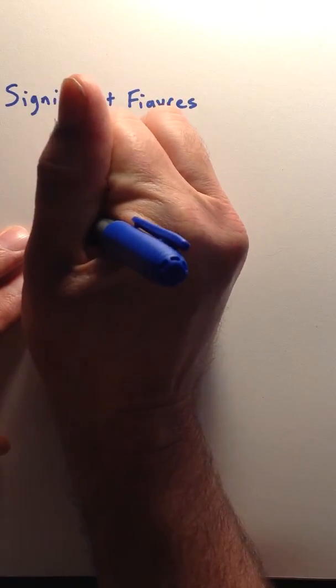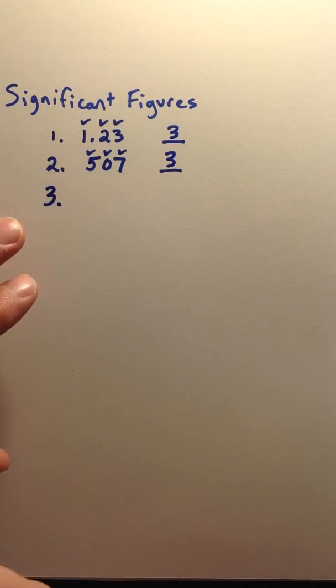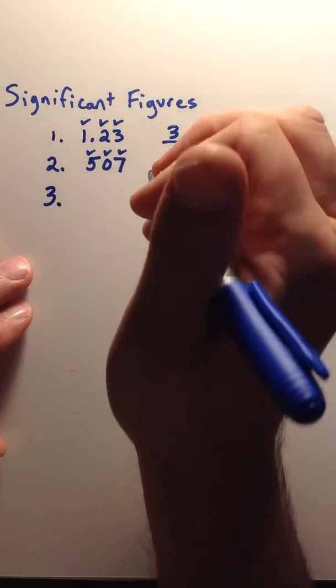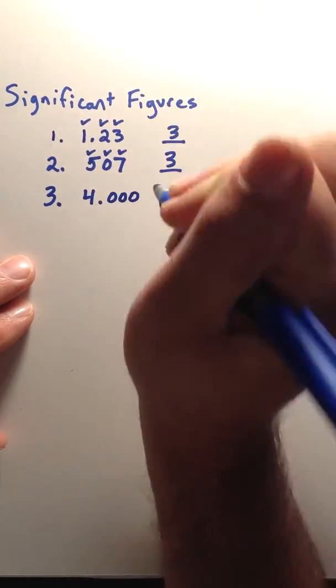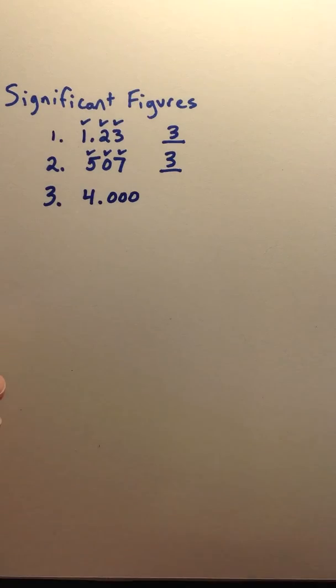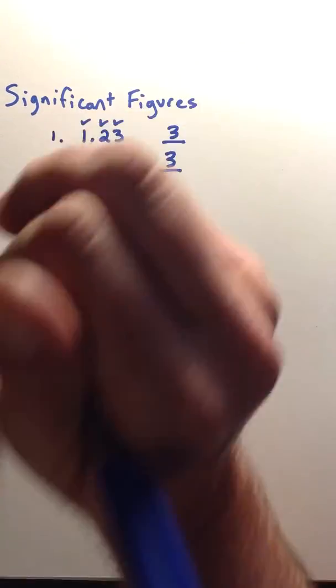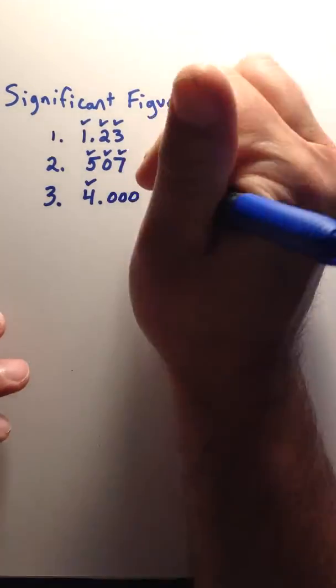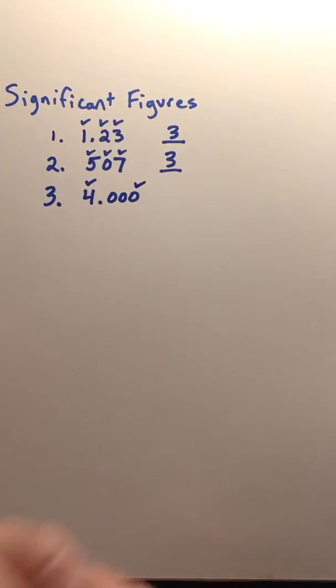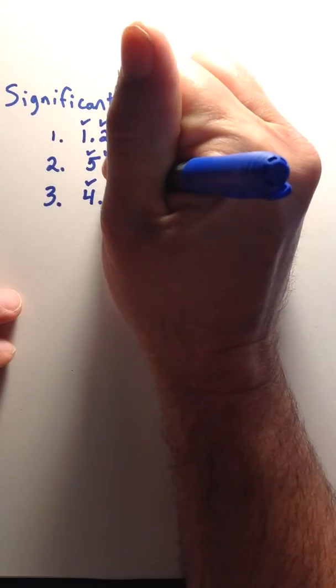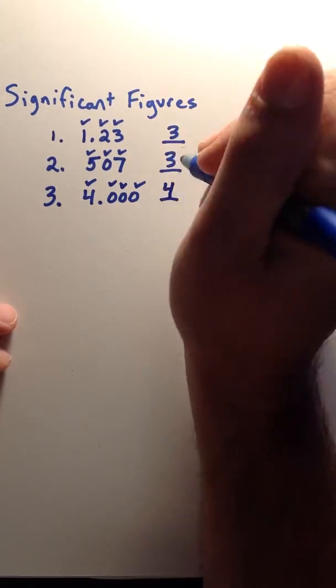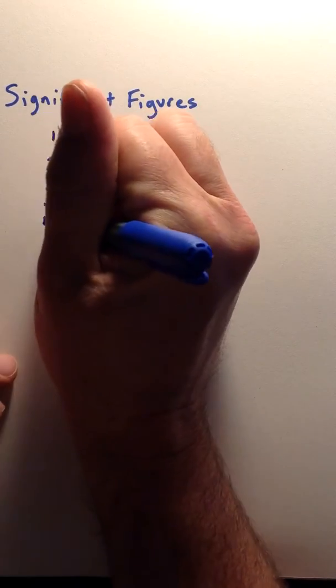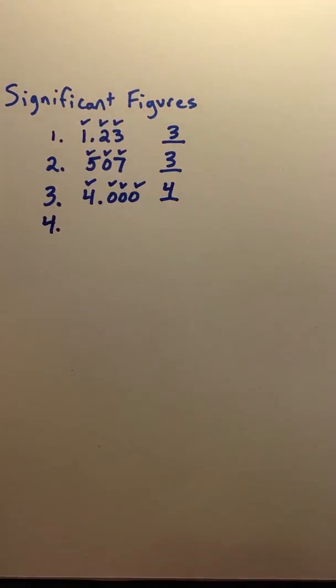The third type that we have are trailing zeros. To give you an example of that, we'll write 4.000. So the first non-zero number, of course, would be the 4. I like to put a check on that one. Then the trailing zero to the right of a decimal, that is also significant.